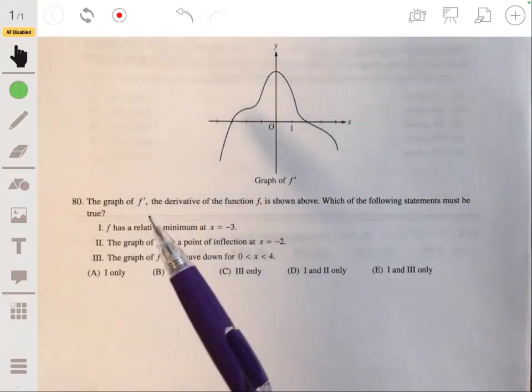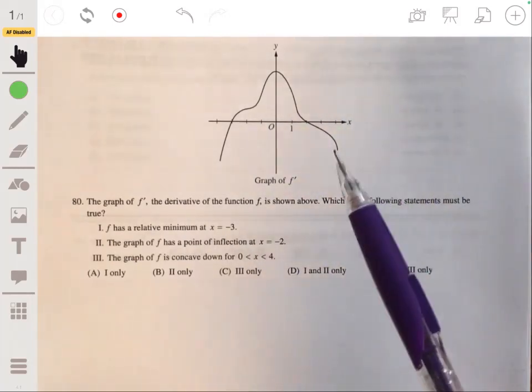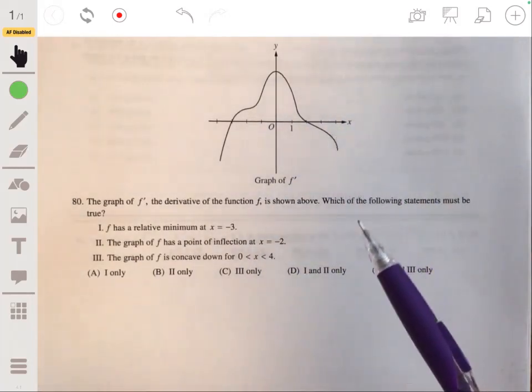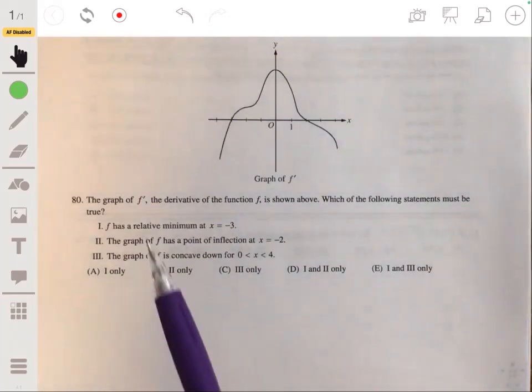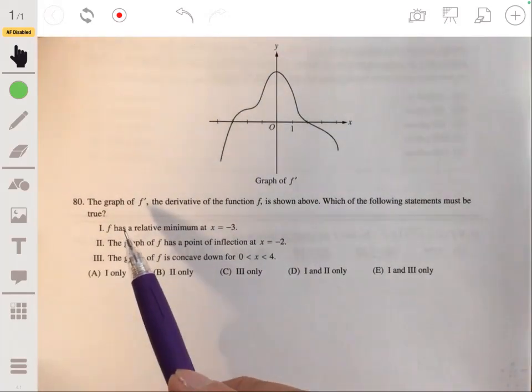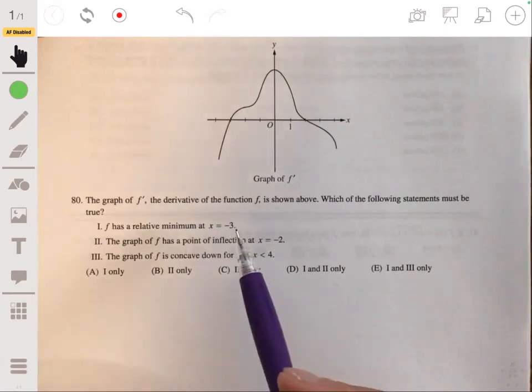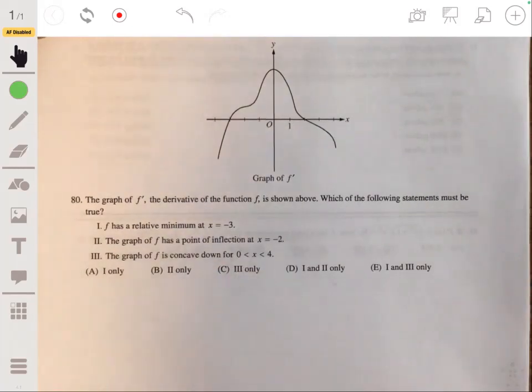All right, problem 80. We have the graph of f prime. The derivative of f is shown here, and we want to figure out which of these statements must be true.